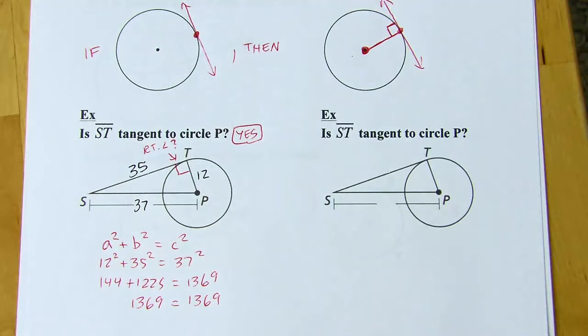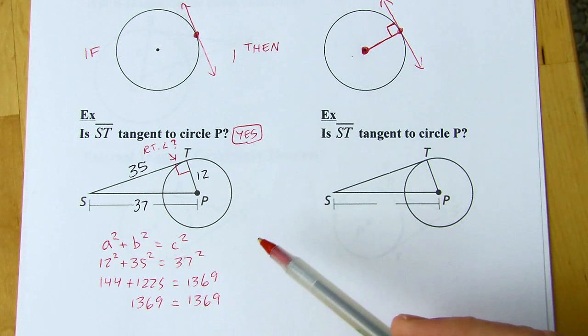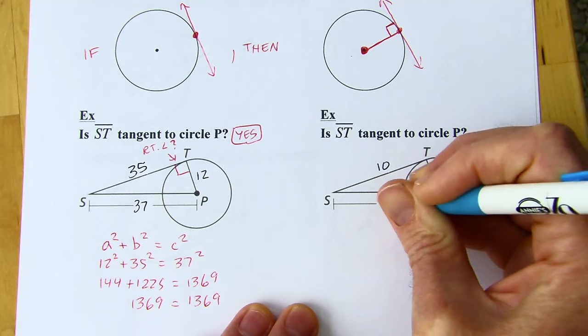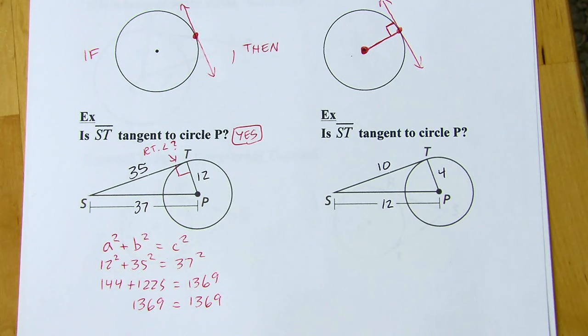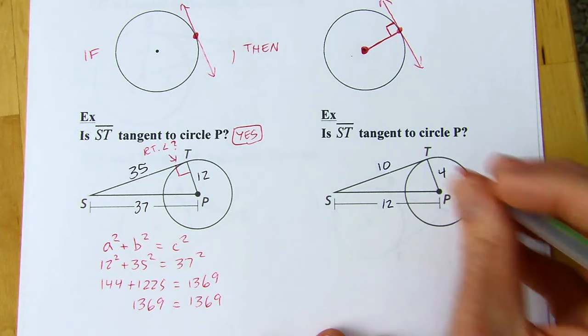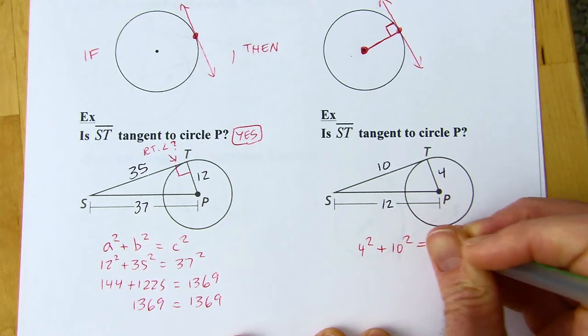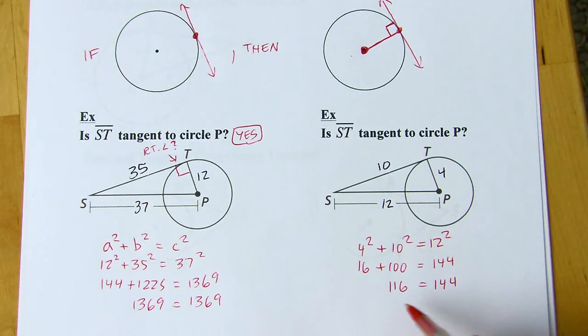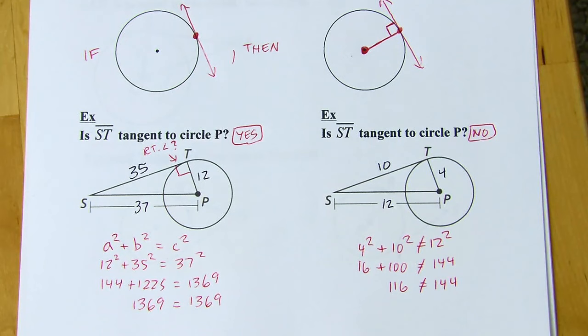On a quiz or test, I wouldn't want to just see yes or no — I'd want to see you try out the Pythagorean theorem, otherwise I might think you just guessed. Now you try this next one. Here is the given info, same question — you can pause the video to try it out. When I try this with the Pythagorean theorem, 116 does not equal 144. It doesn't work with the Pythagorean theorem, so it's either an obtuse or acute triangle. That means I don't have a right angle there and it's not a tangent line.